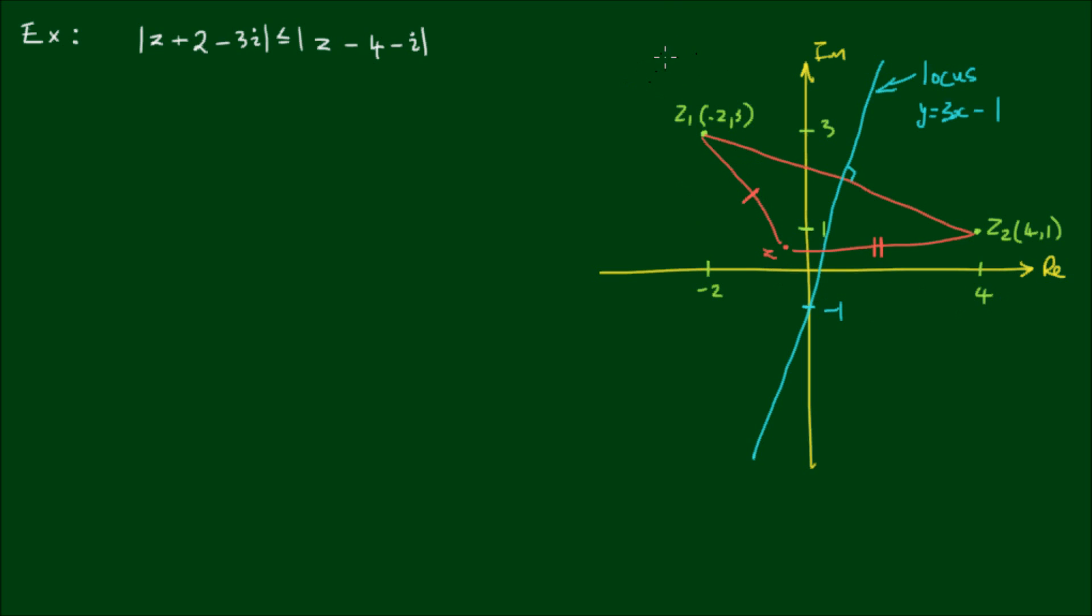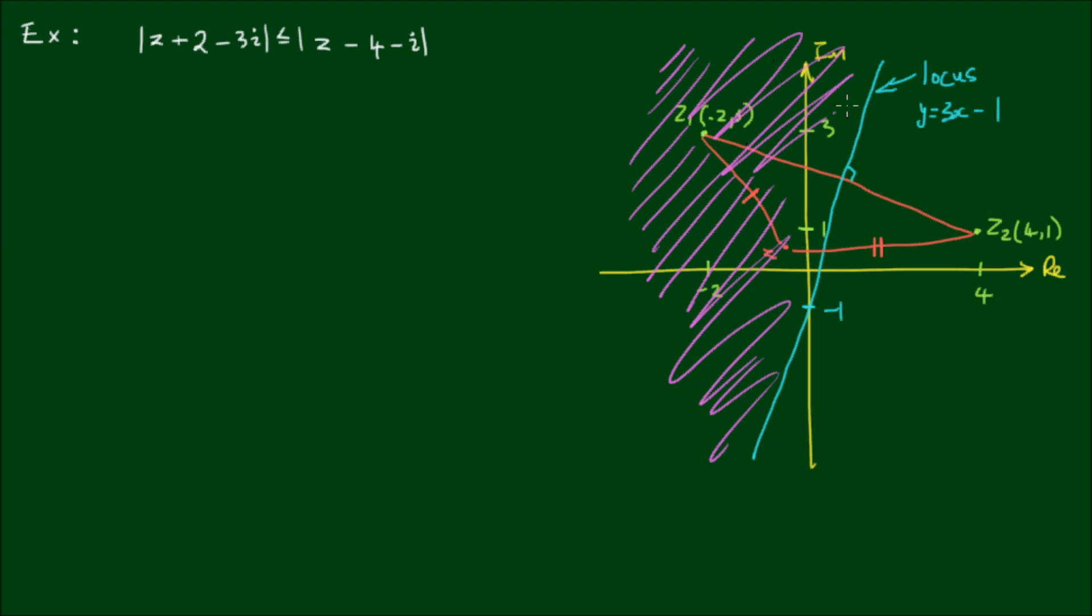So what this means is the locus becomes this purple shaded region that includes the cyan line. But it goes off to infinity in the direction perpendicular to the cyan locus.